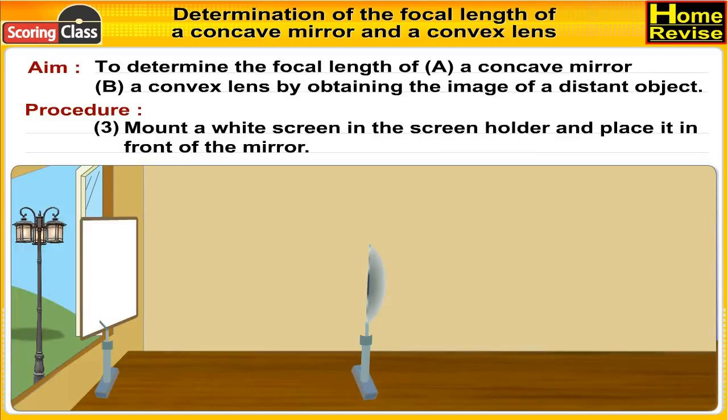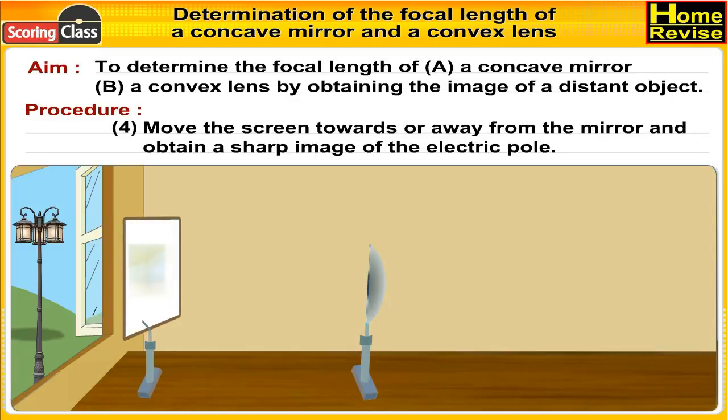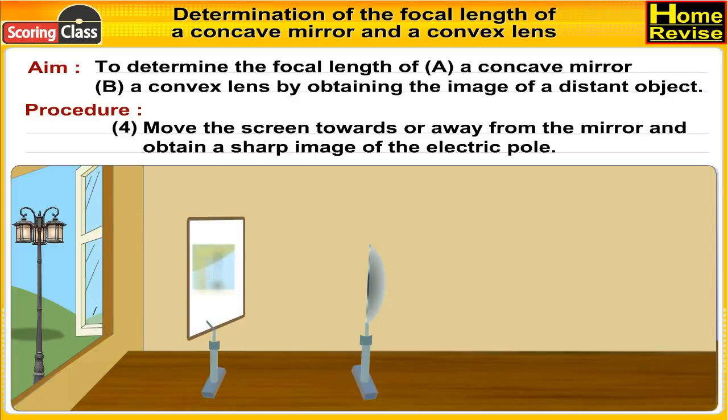Mount a white screen in the screen holder and place it in front of the mirror. Move the screen towards or away from the mirror and obtain a sharp image of the electric pole.